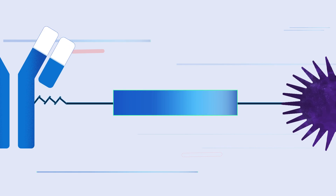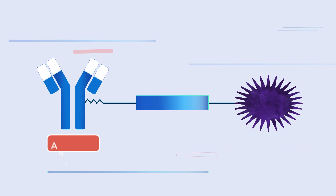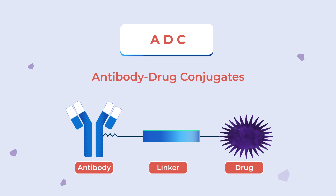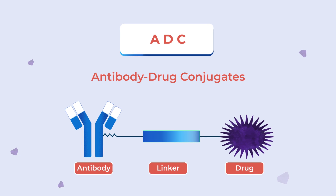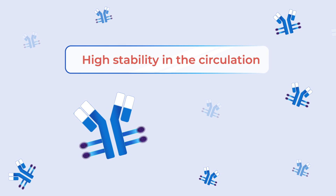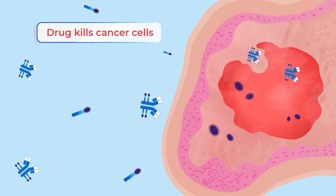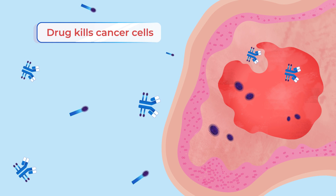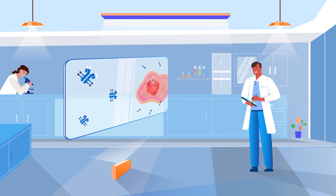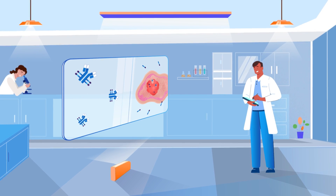The linker connects the antibody and the drug and is a key component in the function of ADCs. The linker imparts the following characteristics to ADCs: 1. High stability in the circulation, and 2. Specific release of drug in the target tissue. To achieve the above requirements, various linkers have been developed.